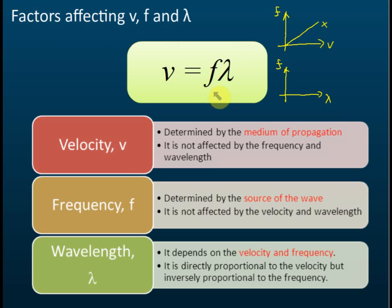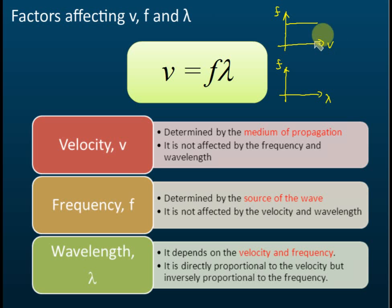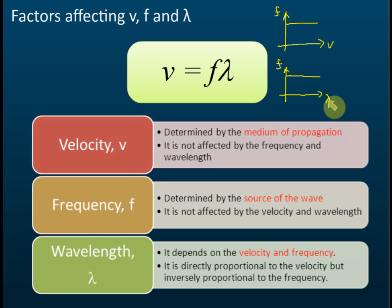This is wrong because frequency is not affected by velocity. No matter how velocity changes, the frequency will not change — it is only affected by the source of the wave. So the correct graph should show frequency remaining unchanged even as velocity increases from zero to a very high value. The same applies for frequency against wavelength — frequency remains constant regardless of wavelength changes.